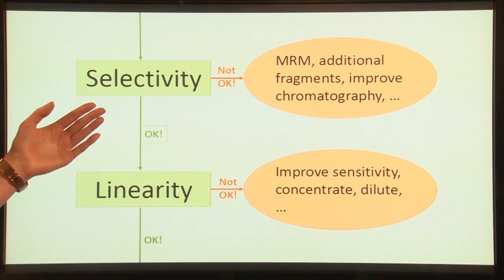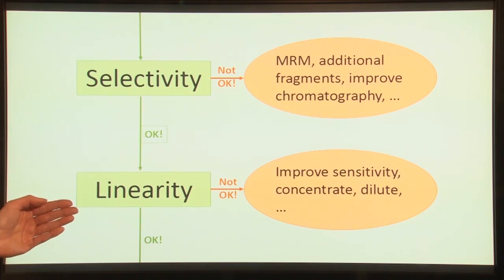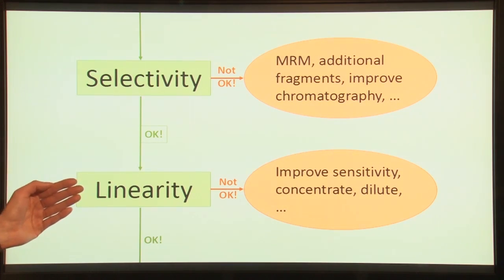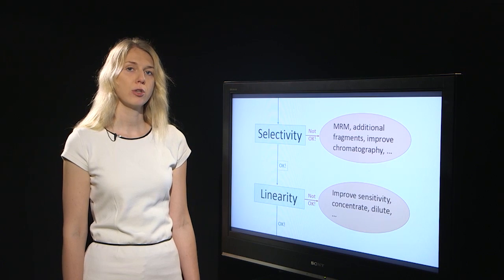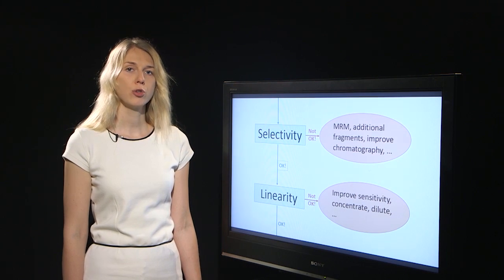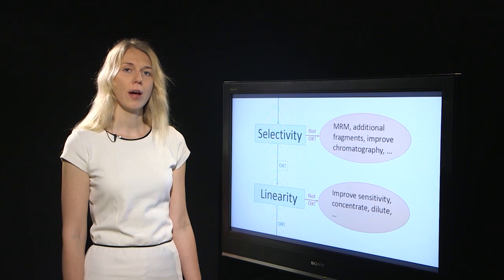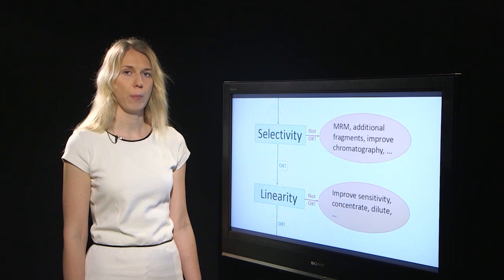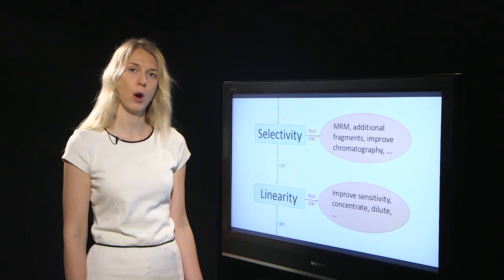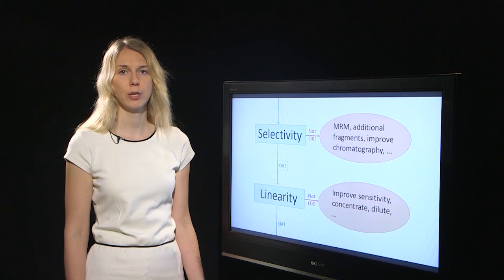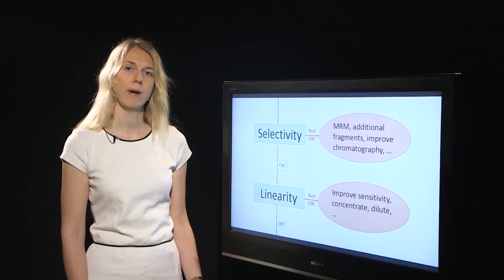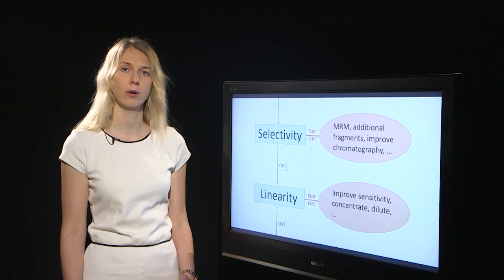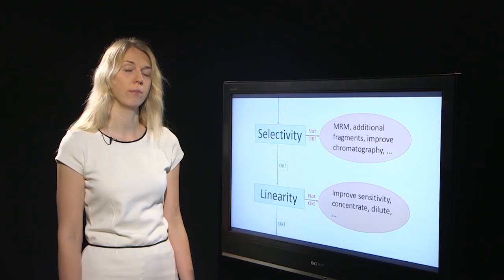When the selectivity is acceptable you can move on to linearity. If linearity is not acceptable you should try to modify the sensitivity of your method. This means you should consider how to improve the ionization efficiency of your compounds — you could adjust the source parameters, the gas temperatures, the gas flow rates, the eluant composition, the pH of the eluant, or the organic modifier content in the eluant.